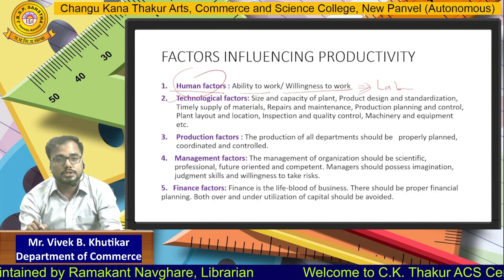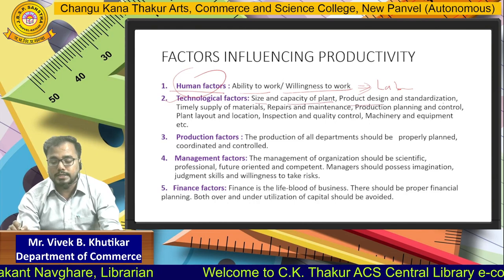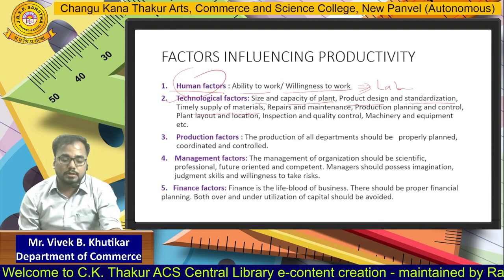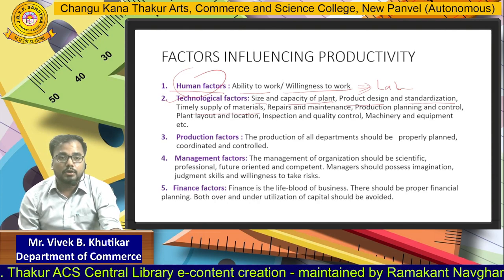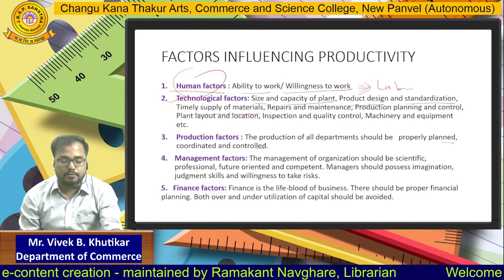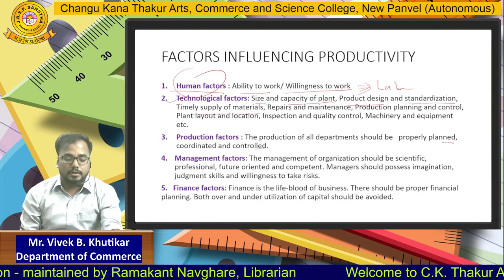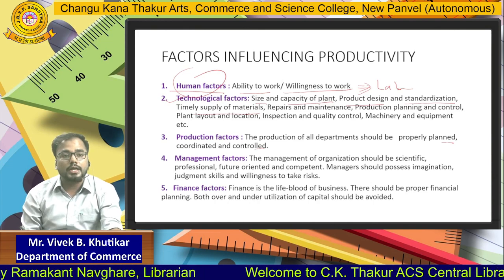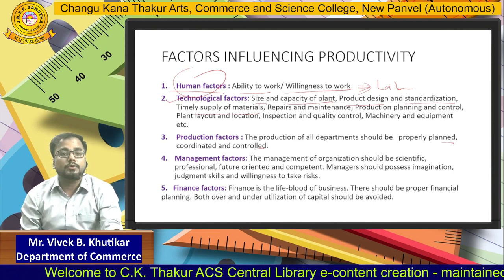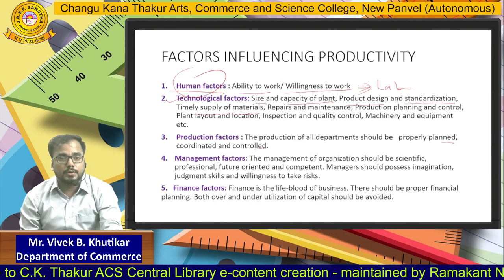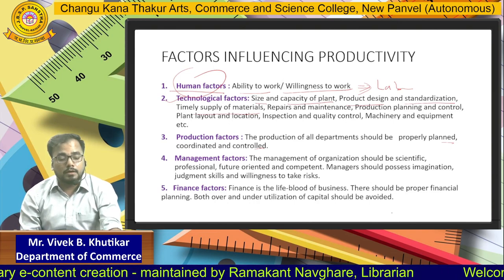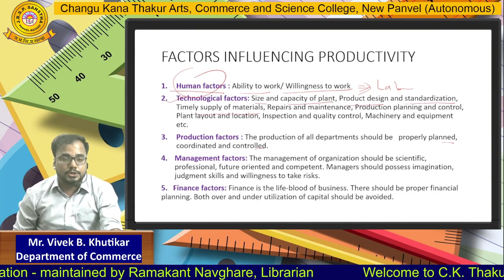The second is Technological Factor, which includes Size and Capacity of the Plant, Product Design, Standardization and Timely Supply of Raw Materials. Third is the Production Factor — the Productivity of the entire Production Department, their Planning, Coordination and Controlling. Next is the Management Factor — the Productivity of Management and Finances. In short, if we want to increase the Productivity of the entire Organization, then the Productivity of each and every department should be increased — utilizing resources across Human, Man, Material, Labour departments. If the Productivity of the Production Department, Finance Department, and HR Department increases, the entire Organization's productivity can be increased.